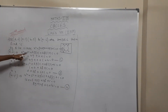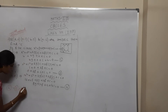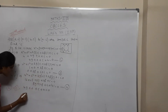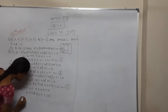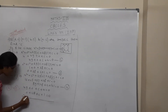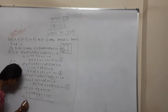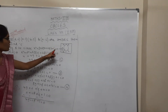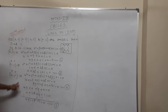Now subtract Equation 2 minus Equation 3. Second equation: 4G + C + 4 = 0. Third equation: 2F + C + 1 = 0. Changing signs and subtracting: 4G − 2F + 3 = 0. Consider this as Equation 5.